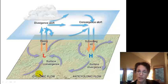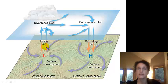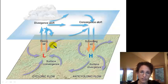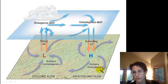Remember we have the Coriolis effect, which in the northern hemisphere is going to cause things to move to the right — it's going to cause air to curve to the right as it's moving. Our low pressure at the surface flows counterclockwise, and our high pressure at the surface flows clockwise.